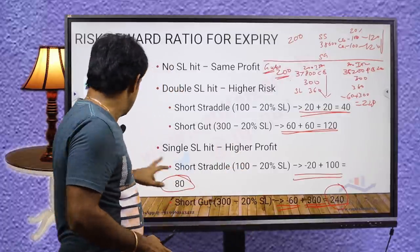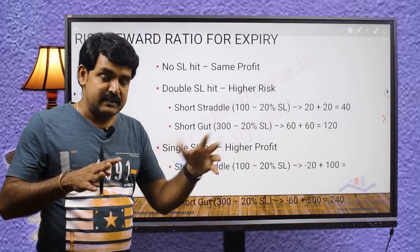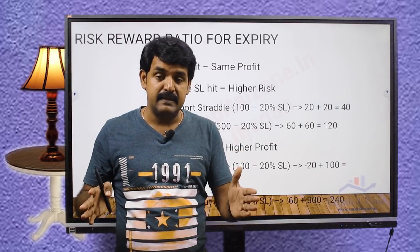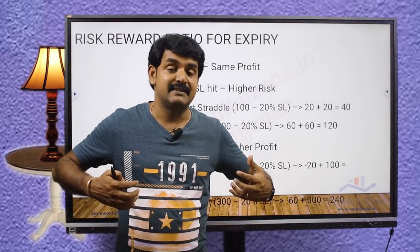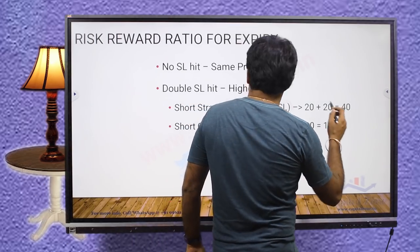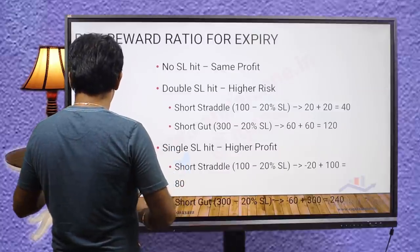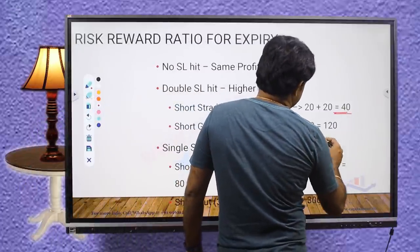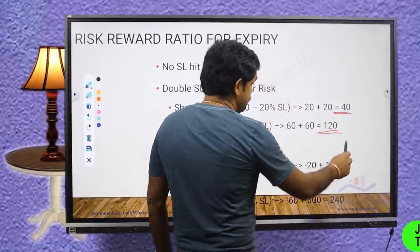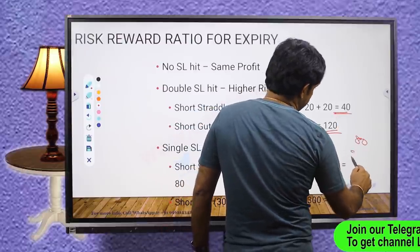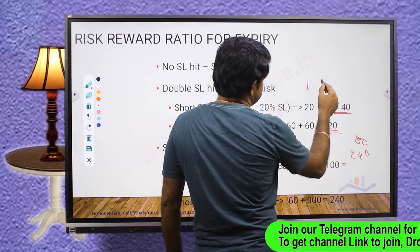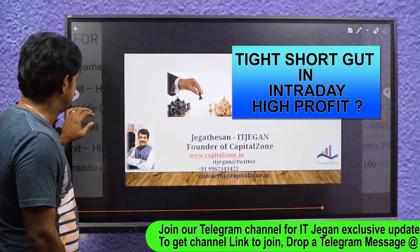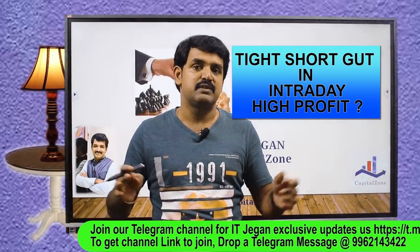So with tight shortcuts: no SL hit - no difference at all, risk and reward ratio is the same. Double SL hit - loss is tripled (40 rupees vs 120 rupees). Single side SL hit - profit is tripled (80 rupees vs 240 rupees). So the ratio is elevated by 1 to 3 across scenarios. This is the advantage of tight shortcuts.